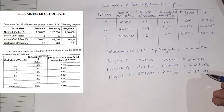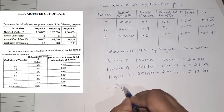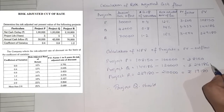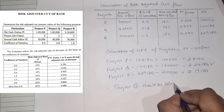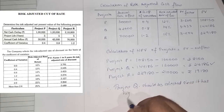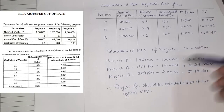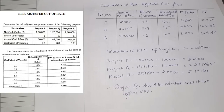Since the NPV of Project Q is the highest, therefore Project Q should be selected. This is how you solve a sum based on risk adjusted cash flow. Whenever they give you risk adjusted in the question, you first find the PV using the risk adjusted cut-off rate, and then calculate the NPV. This was the first type of sum under capital budgeting.